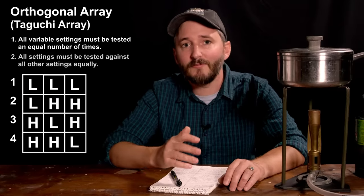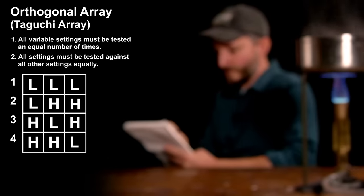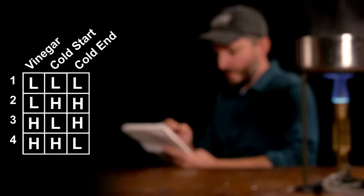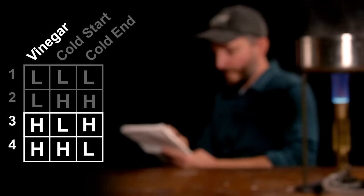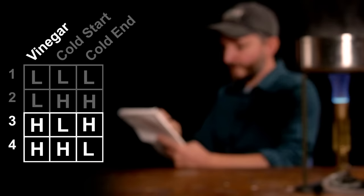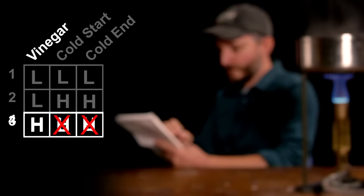A second rule is that every level of each variable should be tested against every level of the others, also an equal number of times. Both of these rules combined means that if we look at any variable on our table, say the vinegar, even though multiple things are being tested at once, look for both tests that the vinegar is high, the changes in the other columns are opposite to one another, meaning if you add the results of these two tests together, the effect of the other variables cancels out.